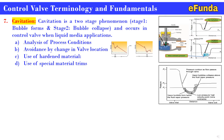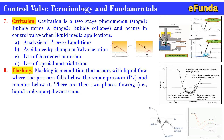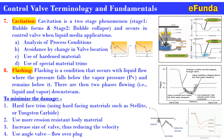Eighth: flashing. Referring to the figure, flashing occurs when P2 remains below the vapour pressure. Unlike cavitation, the outlet pressure P2 stays below the vapour pressure, resulting in two phases flowing downstream — liquid and vapour. Precautions include: use of hard-face trim materials such as Stellite or tungsten carbide; use of more erosion-resistant body material; increasing valve size to reduce velocity through the restriction; or use of an angle valve with flow over the plug to avoid flashing.